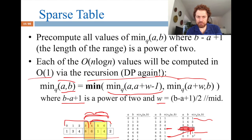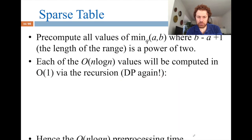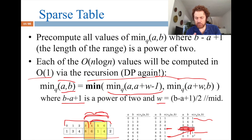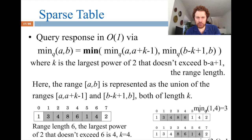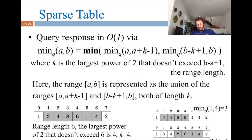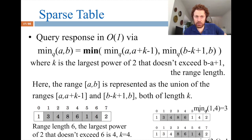Now we will improve on this by enabling updates on the array, making the array dynamic. We use the Binary Indexed Tree (BIT), also known as Fenwick tree after its inventor. BIT is a more memorable name. It handles sum queries in O(log n) time.